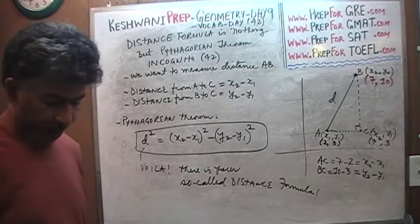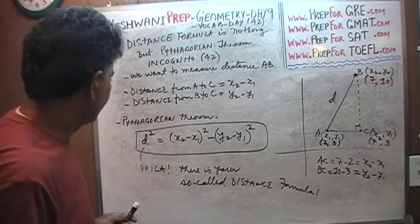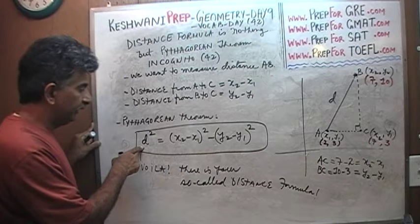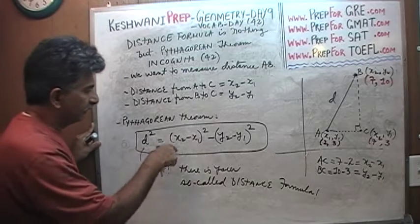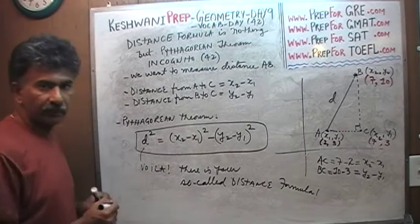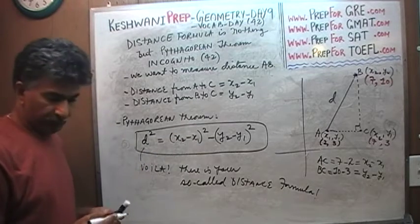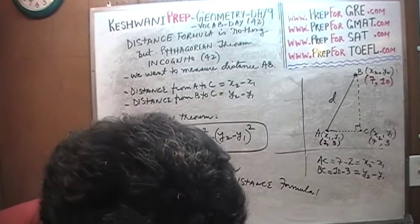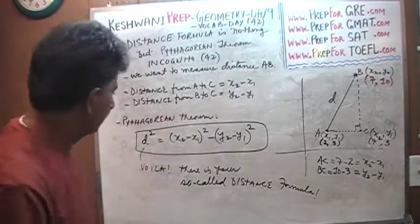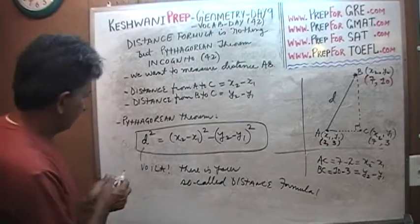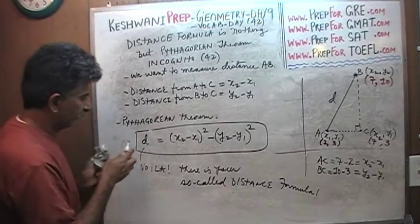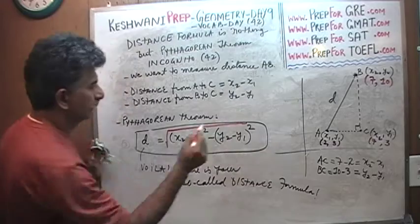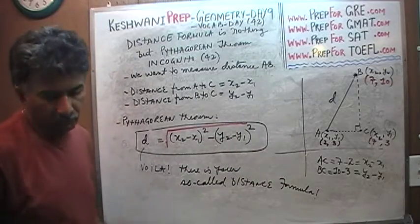Incognito. The only difference is that when they present the distance formula, they do not write D squared — they just leave it as D. And if you're going to leave it as D and not the square of it, then you have to take the square root of both sides. There is your so-called distance formula. There is nothing to it.